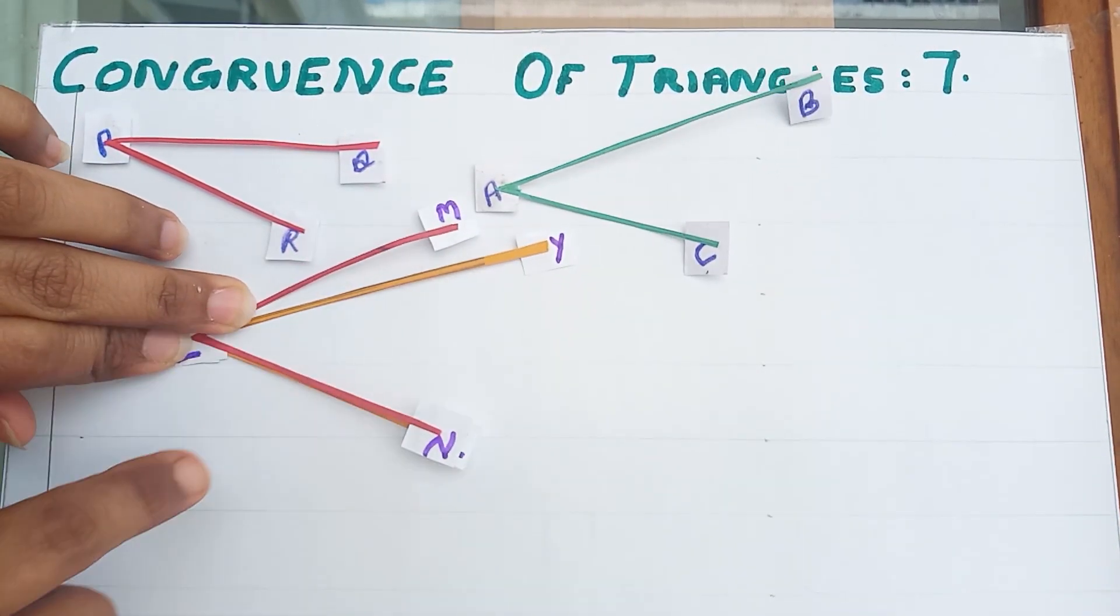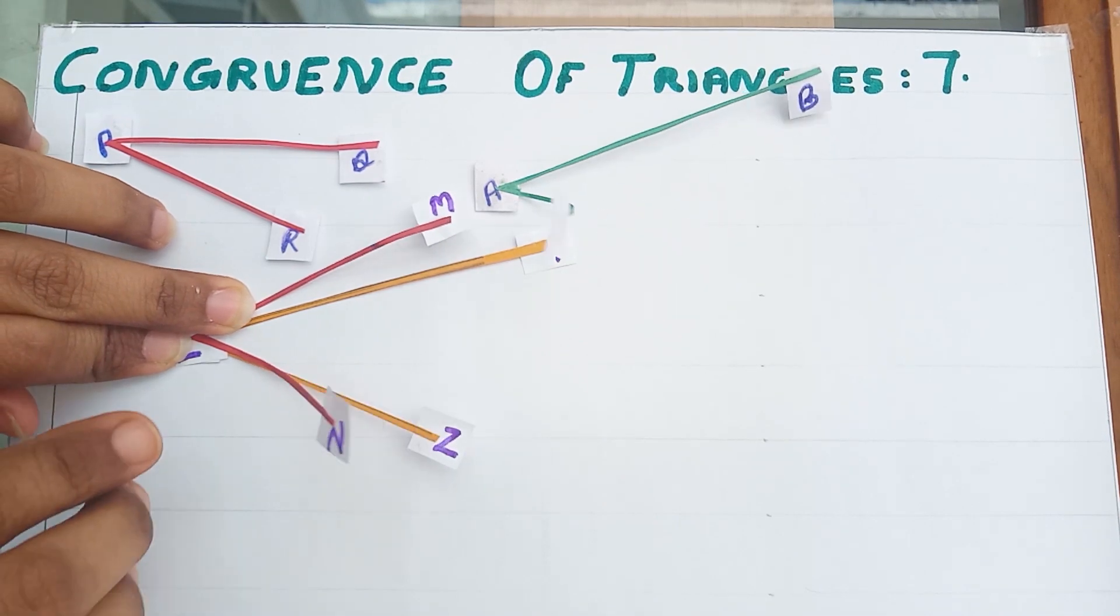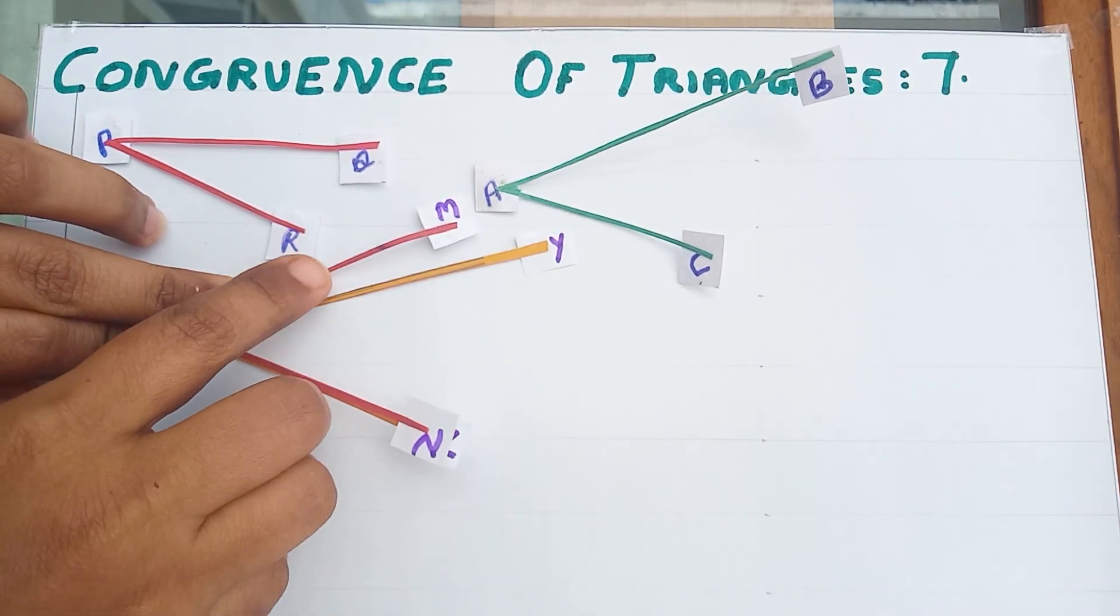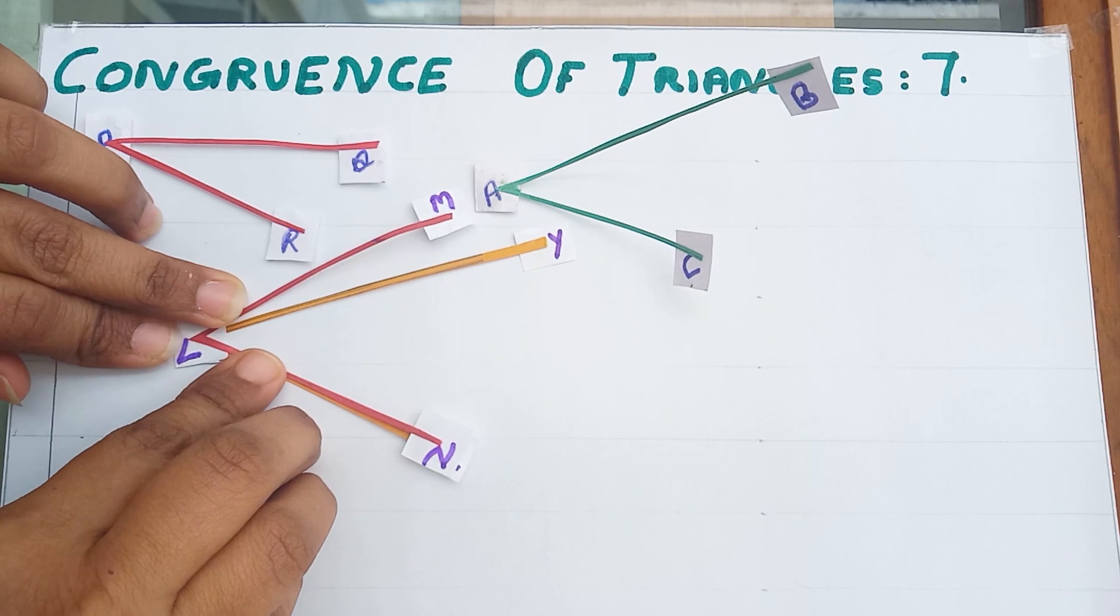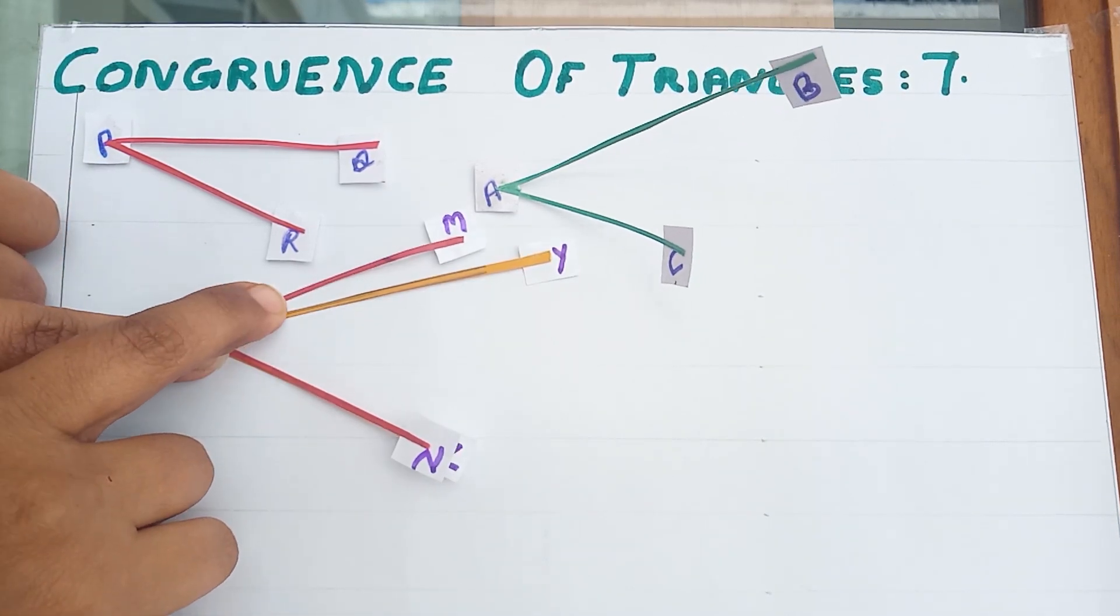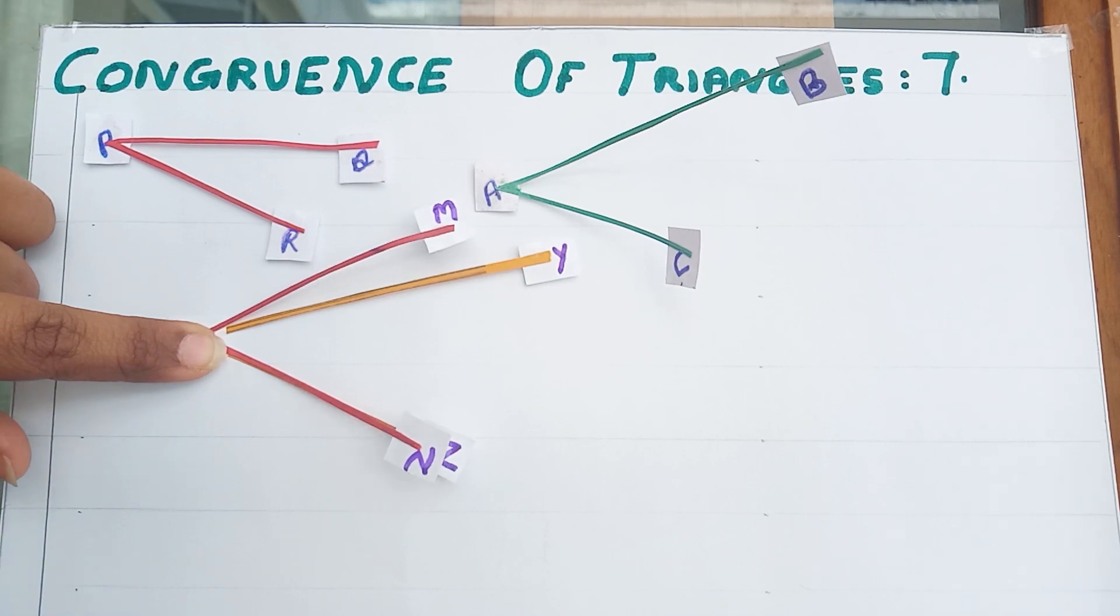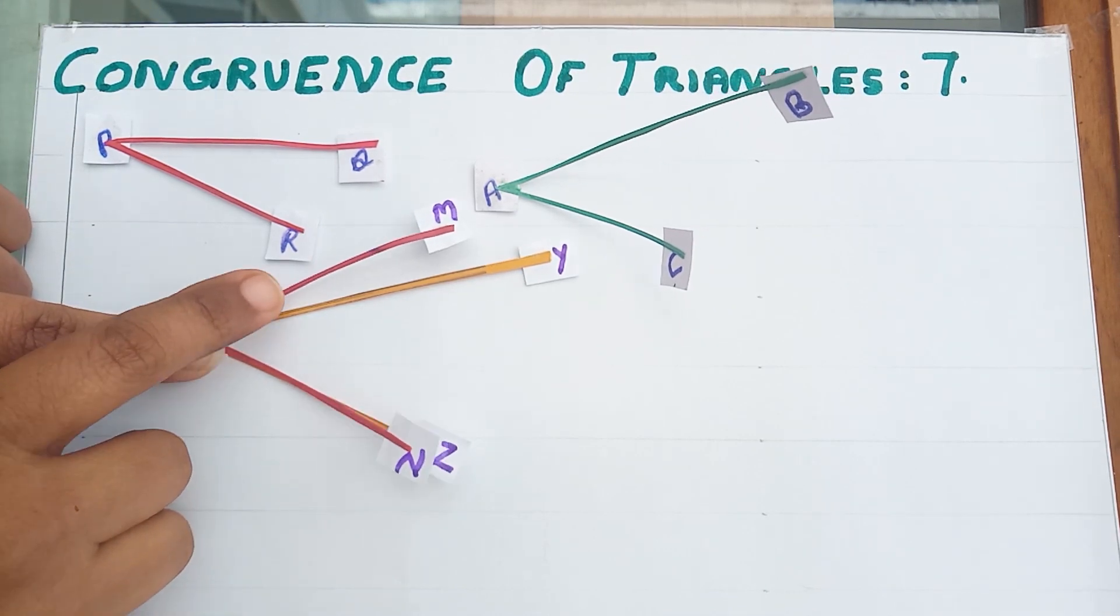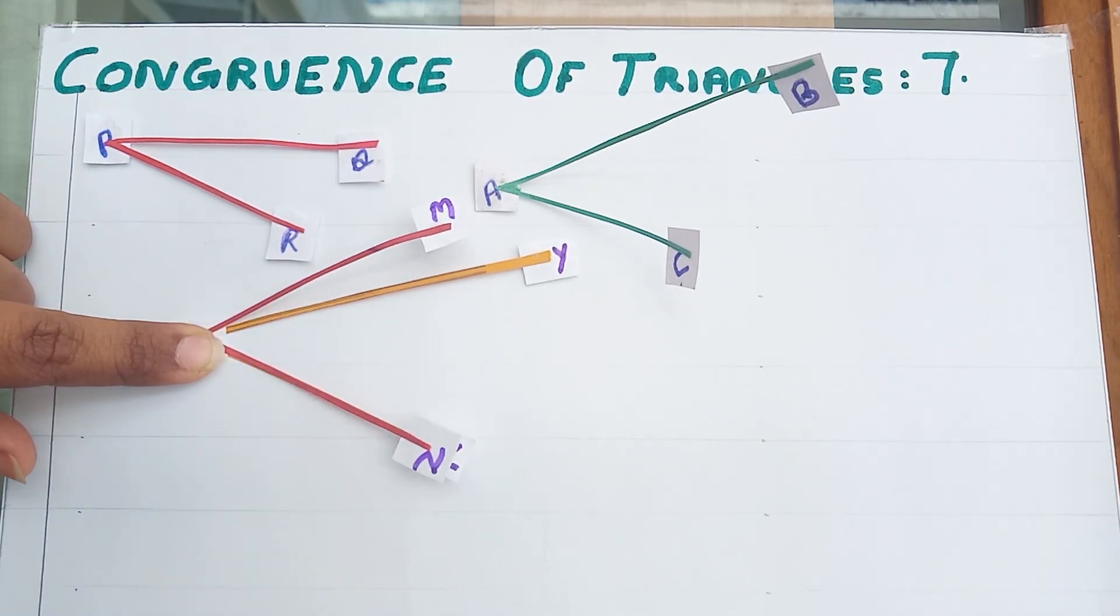Are these angles congruent? No. Why? The arms are not coinciding. Here these two arms are coinciding but here it is not coinciding. That means measure of these two angles are not same.